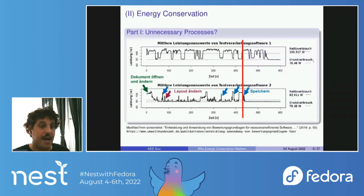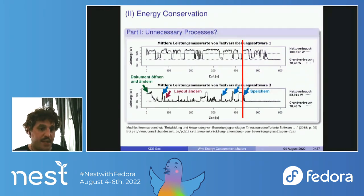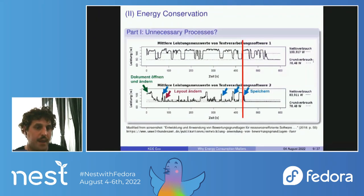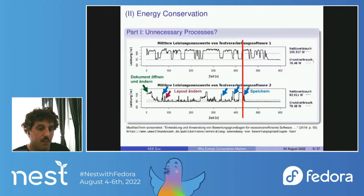Now let's think about energy conservation and the processes running when we use a computer program. This is from the German Environment Agency comparing two text editors over time, showing energy consumed at each point. After the red line — the point when both text editors save the document and go idle — the bottom plot shows one editor truly going idle, while the upper plot shows the other continuing to perform various tasks. What is happening there? Is it telemetry, phoning home? Is it necessary for a text editor's functionality? Can users disable these extra processes?